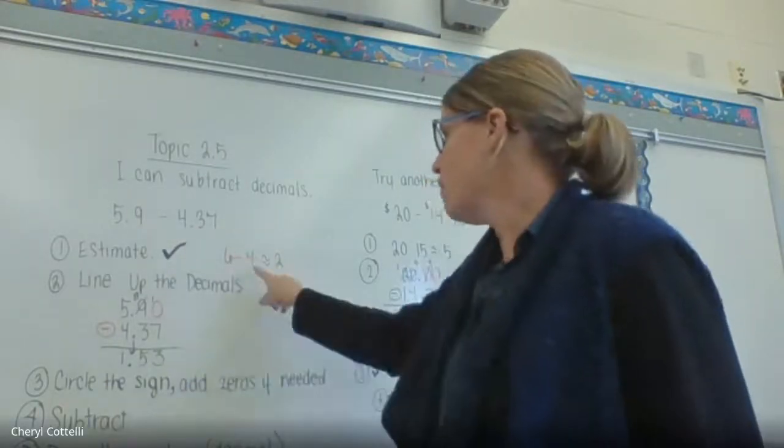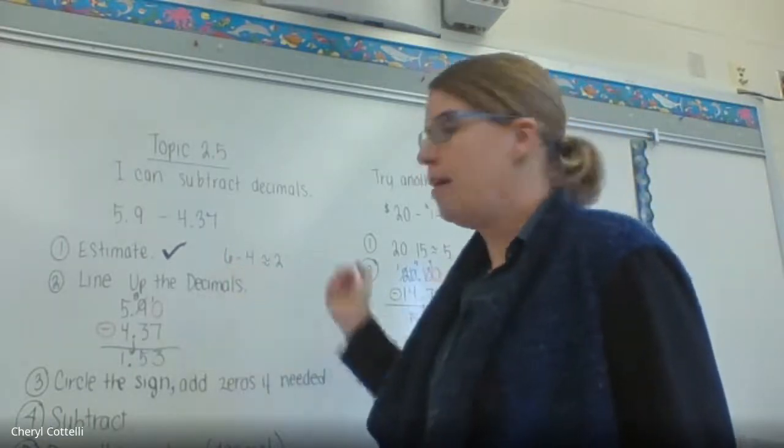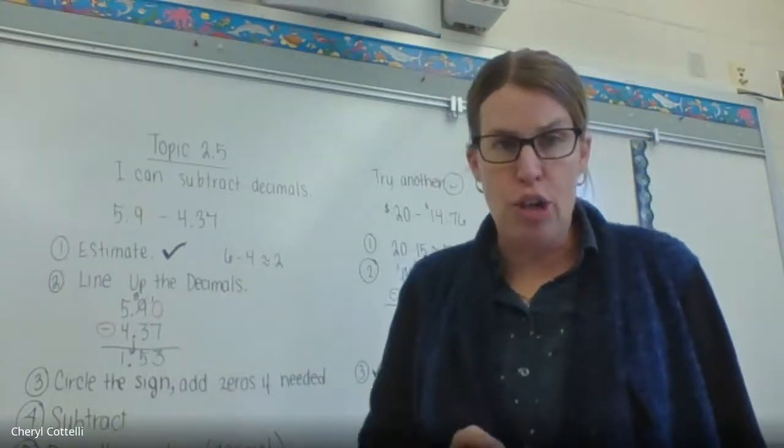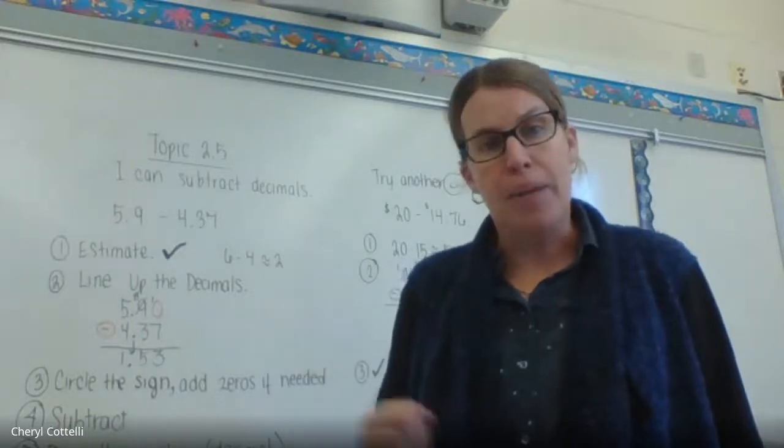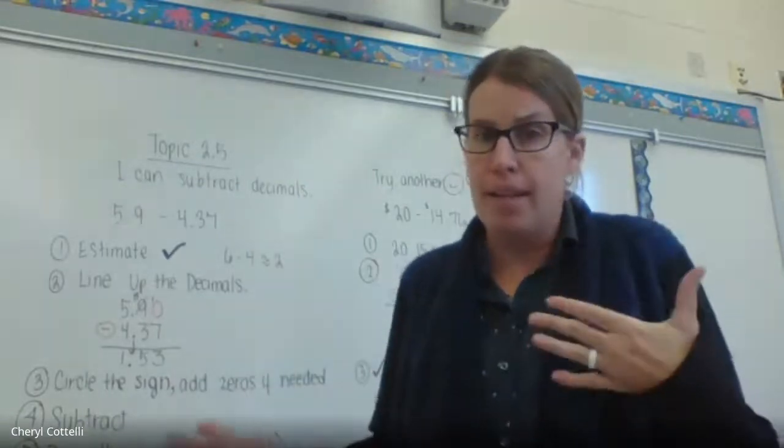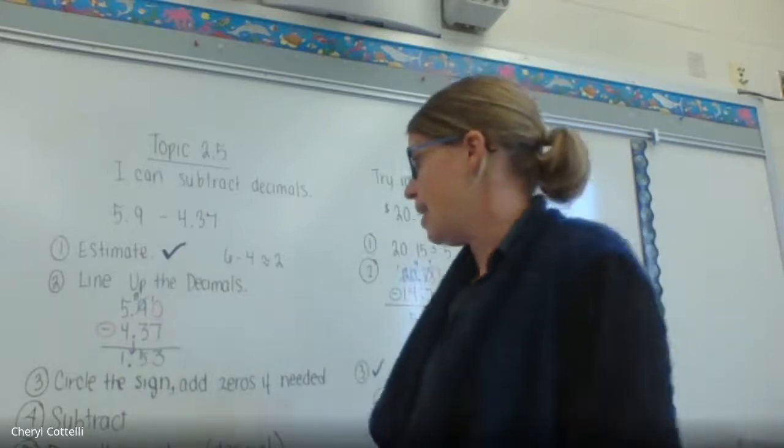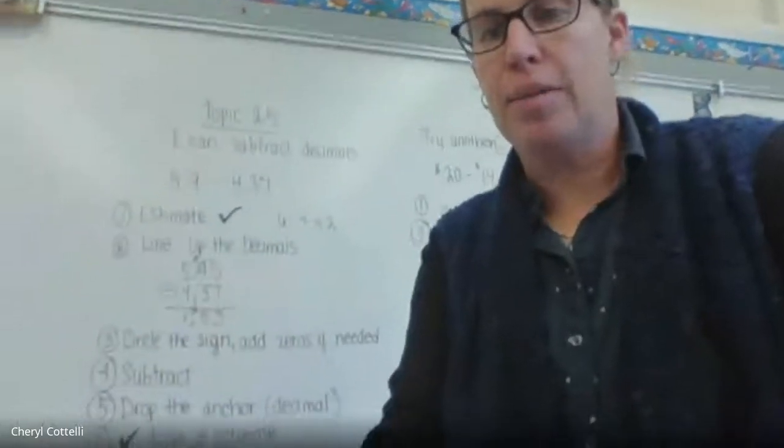When we subtract 6 minus 4, our answer should be about 2. We're going to come back to that when we get to the answer and see if we're right, because sometimes we forget to put the decimal or we put the decimal in the wrong spot. So estimating is a good way to help us check the answer.